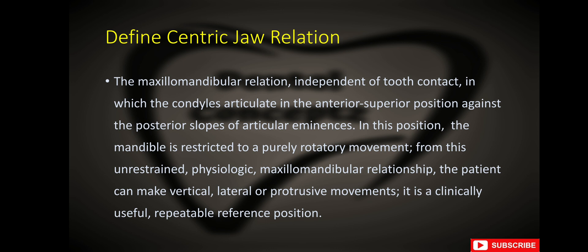What is centric jaw relation? Centric jaw relation is the maxillomandibular relation, independent of tooth contact, in which the condyles articulate in the anterior superior position against the posterior slopes of the articular eminences. In this position, the mandible is restricted to a purely rotatory movement. From this unrestrained physiologic maxillomandibular relationship, the patient can make vertical, lateral, or protrusive movements. It is a clinically useful, repeatable reference position.